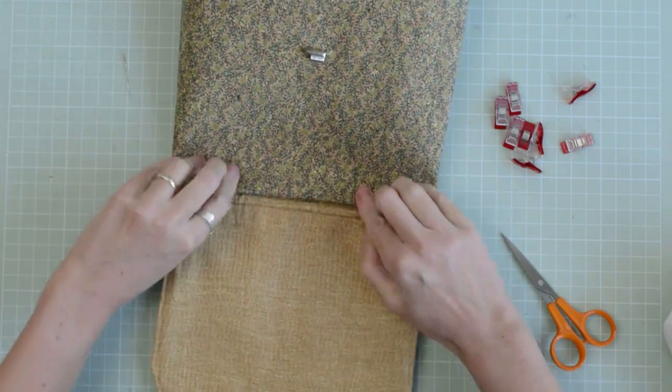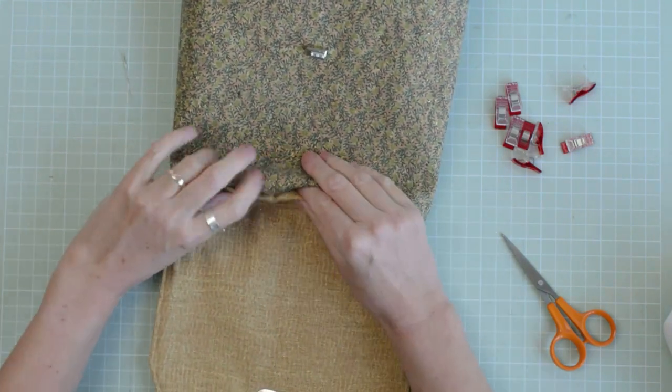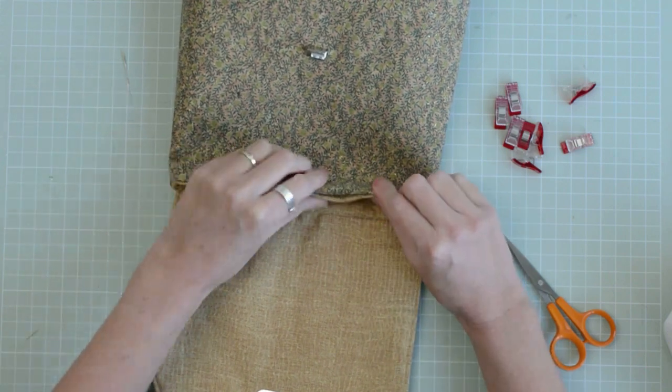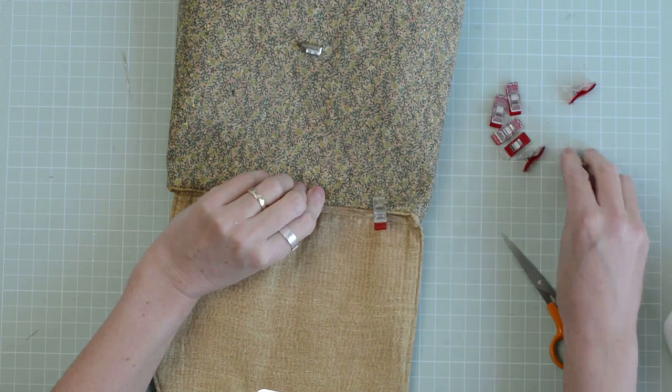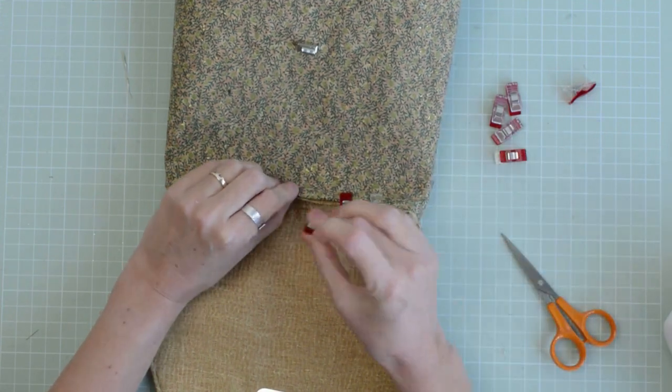Now we are going to turn in that turning gap and hold in place with clover clips. And then we're going to topstitch around the top of the bag. We're just going to hold the lining in place and close that turning gap.